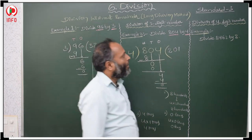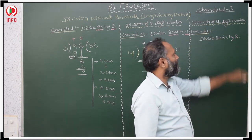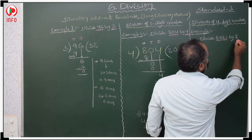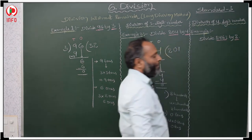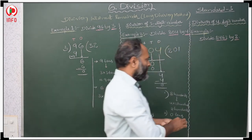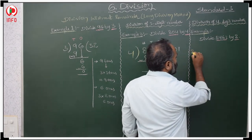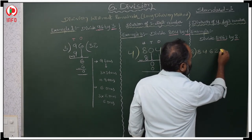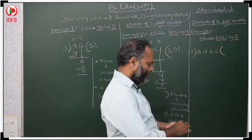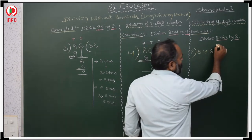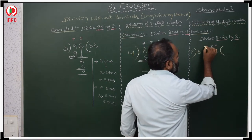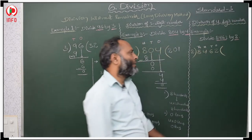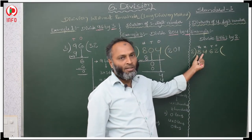Now, division of a 4-digit number. The 4-digit number is 8,462 divided by 2. This is in 1's place, 10's place, 100's place, and 1000's place. We take the extreme left digit, which is 8,000.